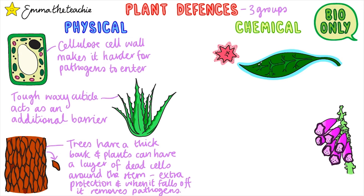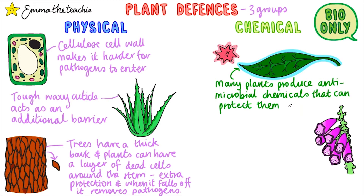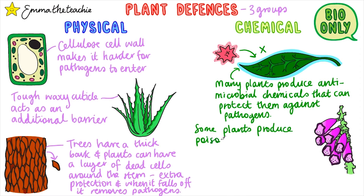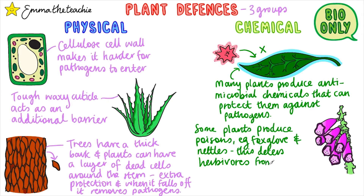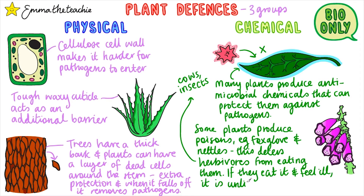Now let's look at chemical defenses. Many plants produce antimicrobial chemicals that can protect them against pathogens. In the developing drugs video we saw that chemicals from plants form the basis of many traditional medicines based on this property. Some plants produce poisons, for example foxgloves and nettles. This deters herbivores from eating them. Herbivores include large animals like cows and smaller animals like insects. If the animal feels unwell after eating the plant, then it's unlikely to eat the same type of plant again.